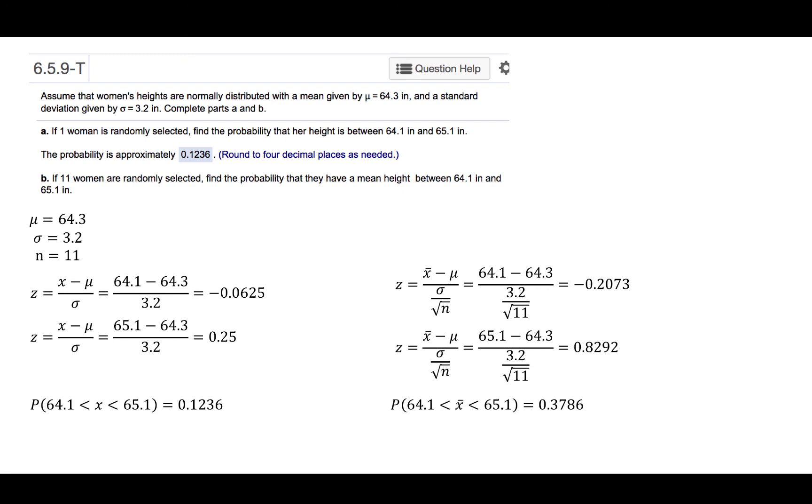Note that this is quite a bit larger than the probability that an individual data value would be between those same two values.